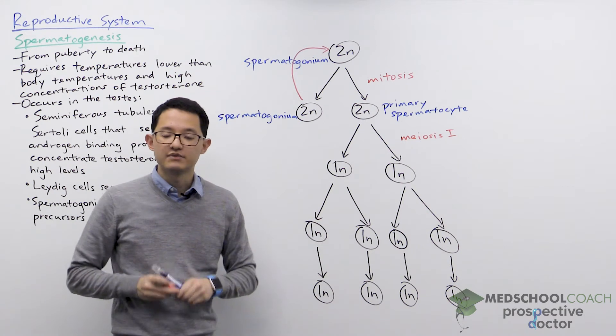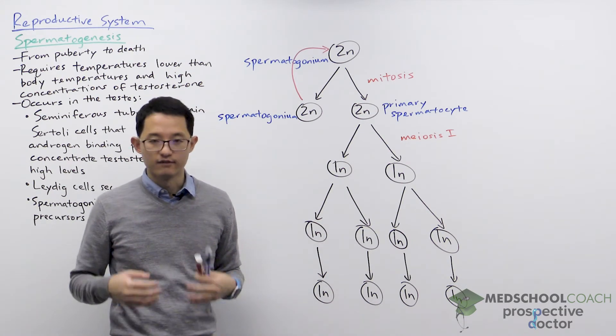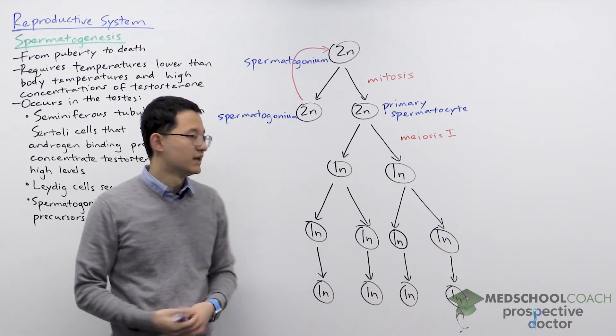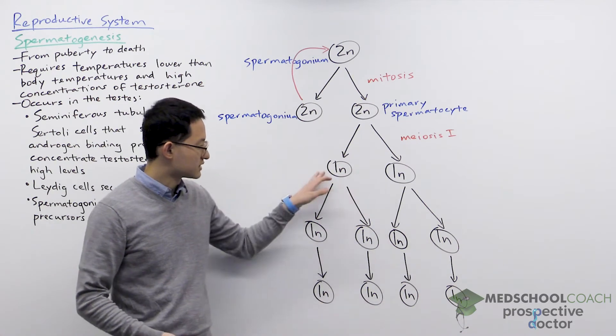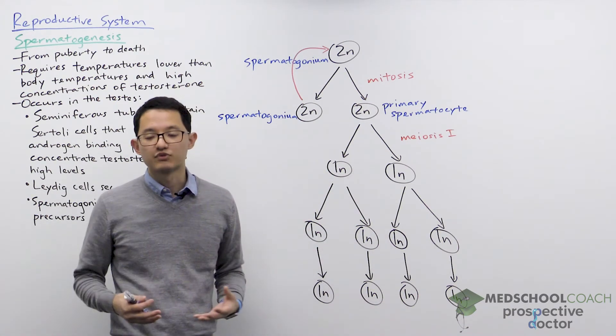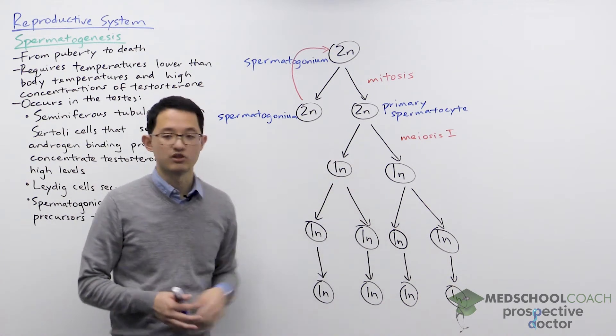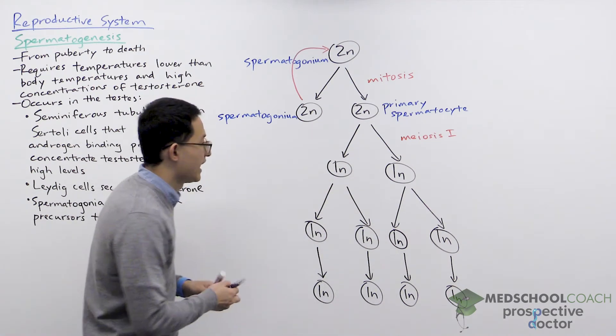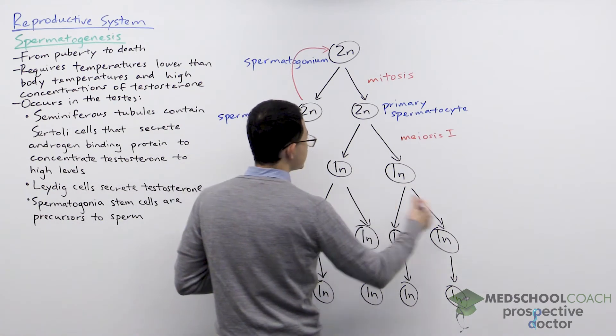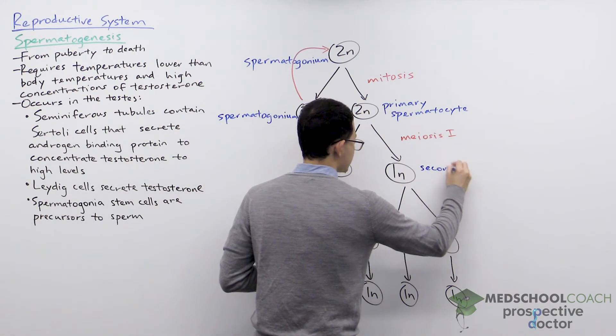Meiosis I involves the segregation of the homologous chromosomes. So each of these daughter cells no longer has chromosomes from both the father and the mother—it only has one copy of each homologous chromosome. After meiosis I, these haploid cells are called secondary spermatocytes.